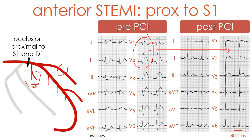As discussed in coming videos, S1 can be proximal in relation to the takeoff level of the first diagonal branch, but in other patients the first septal branch originates after the first diagonal branch.